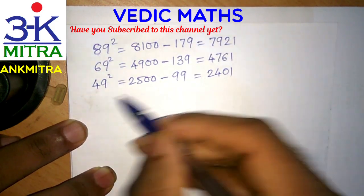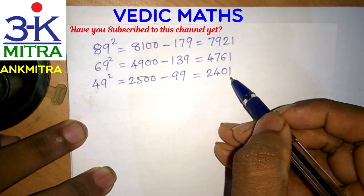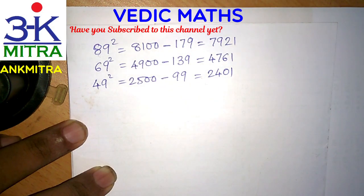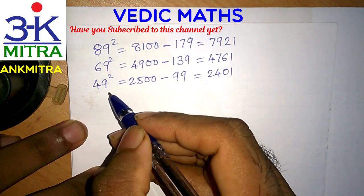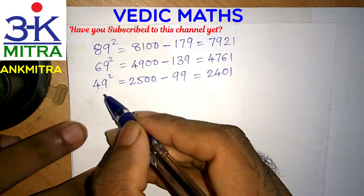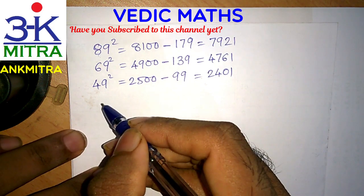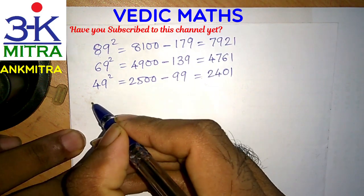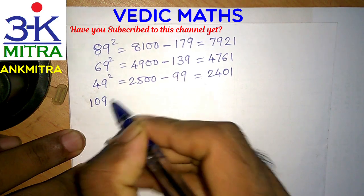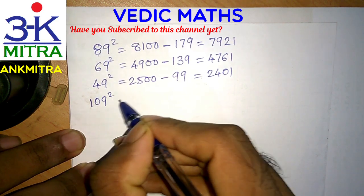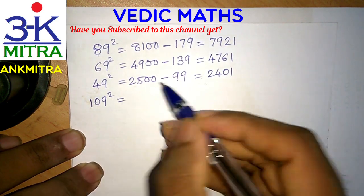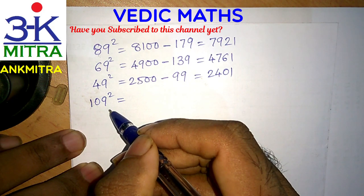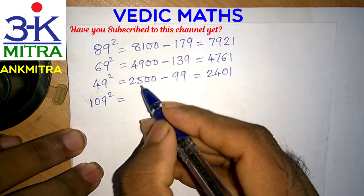We have already done it in a matter of less than four seconds while explaining it. Similarly, we can find the square of a three-digit number which is one short of a perfect round number. Let's consider the number 109. The nearest perfect round number is 110.